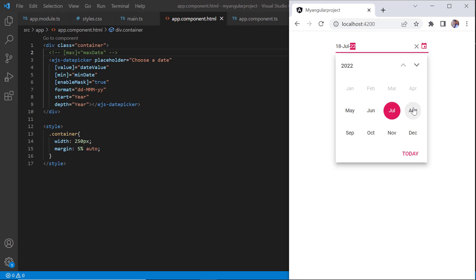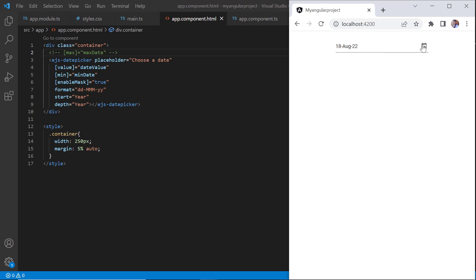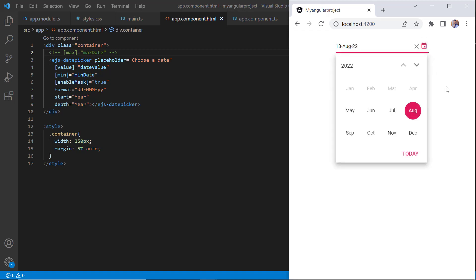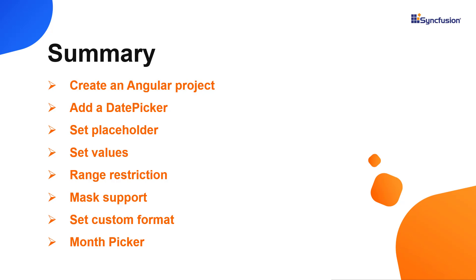This shows how easily you can define the features of the Angular DatePicker using its simple built-in APIs. In this video, I have shown you how to create and configure the Syncfusion Angular DatePicker component using the Angular CLI command and a few of its basic features. You can download a working example from the GitHub link in the description below. You can also see if you're eligible for our community license, which will get you a free license key to use our products.